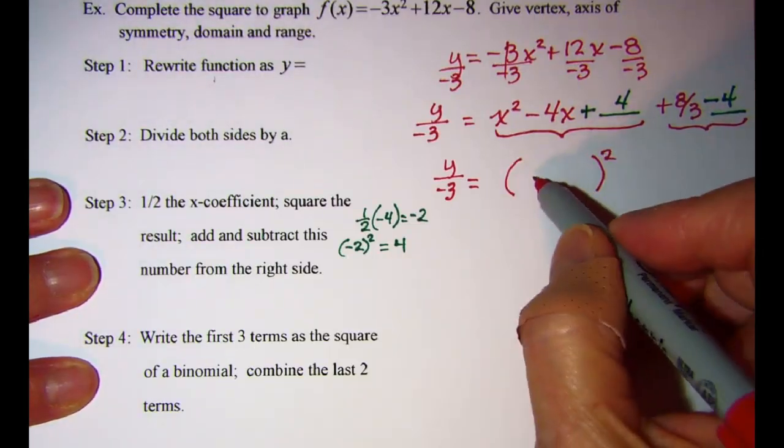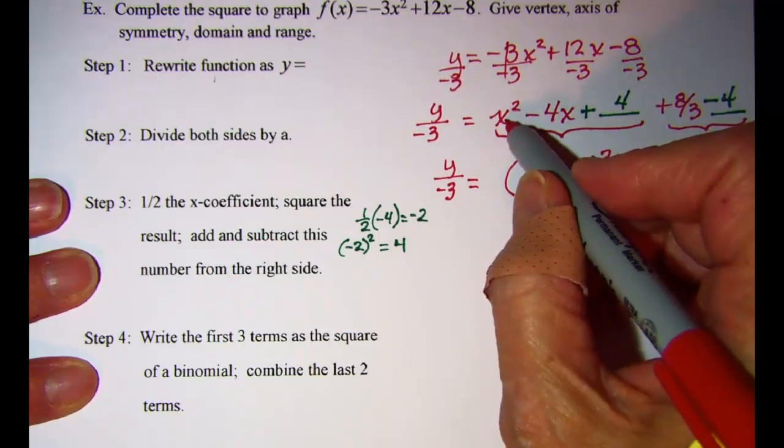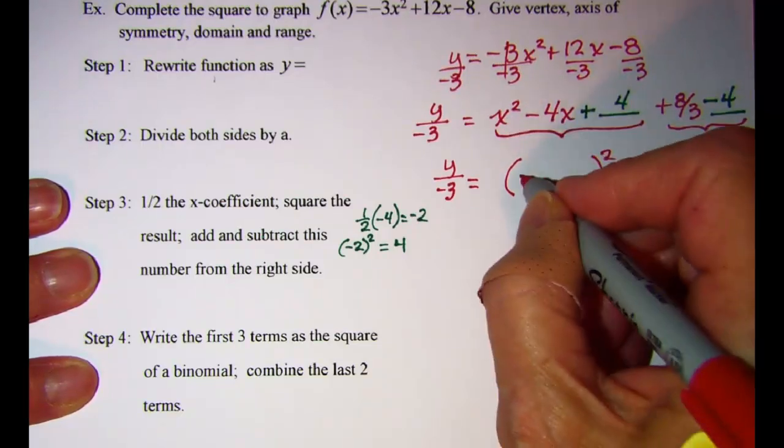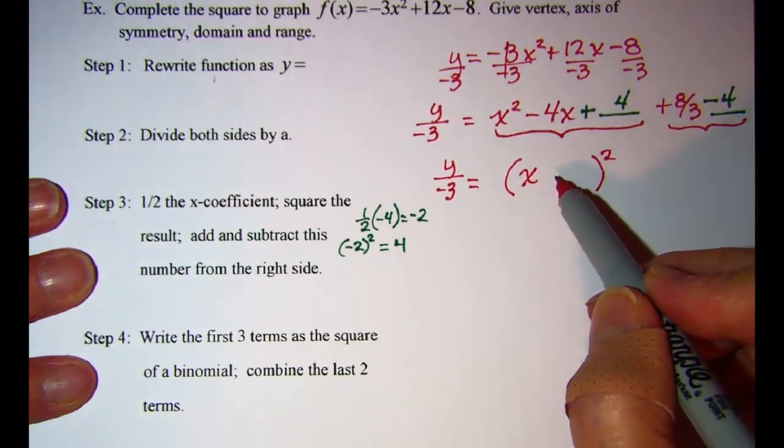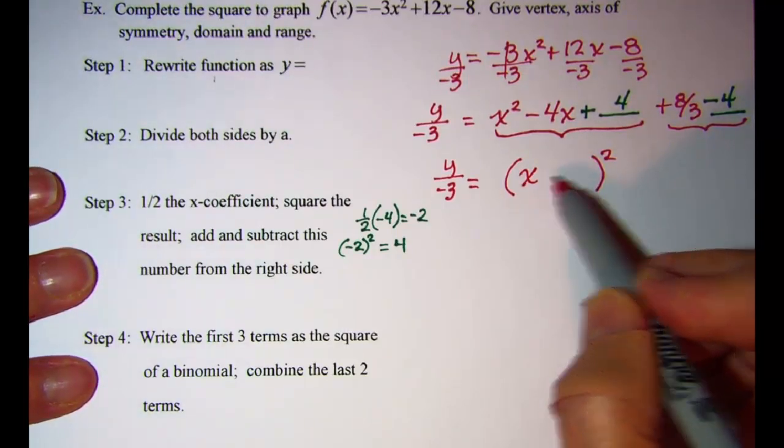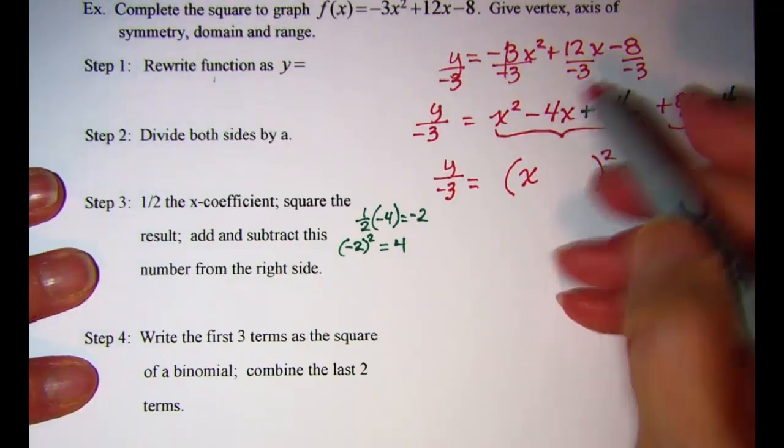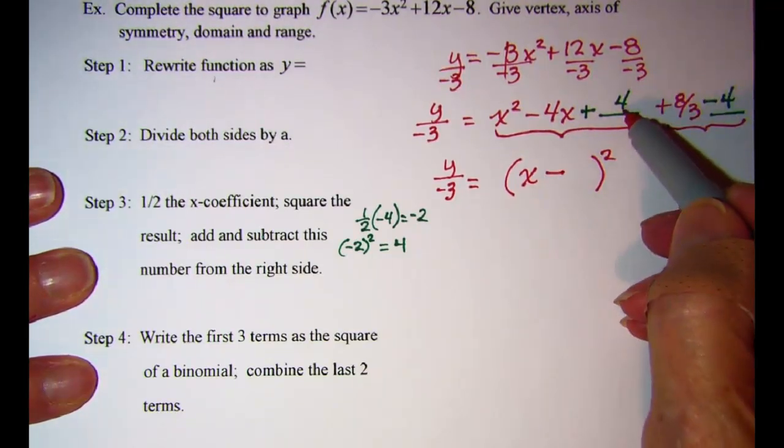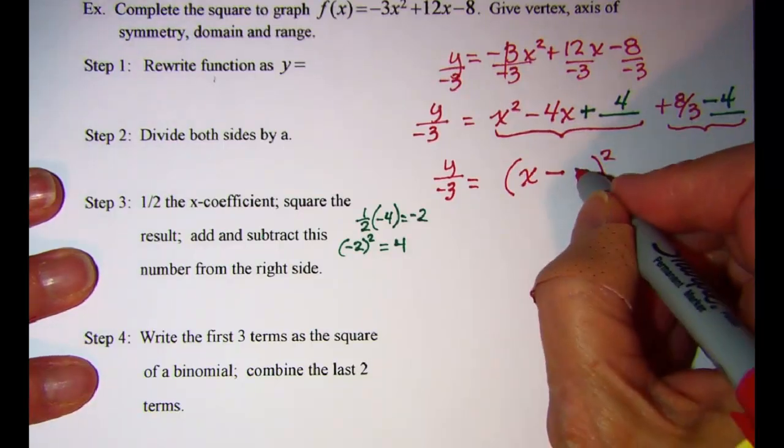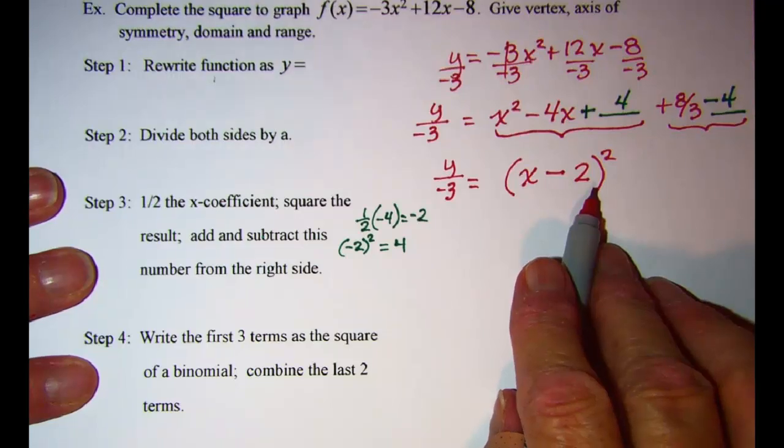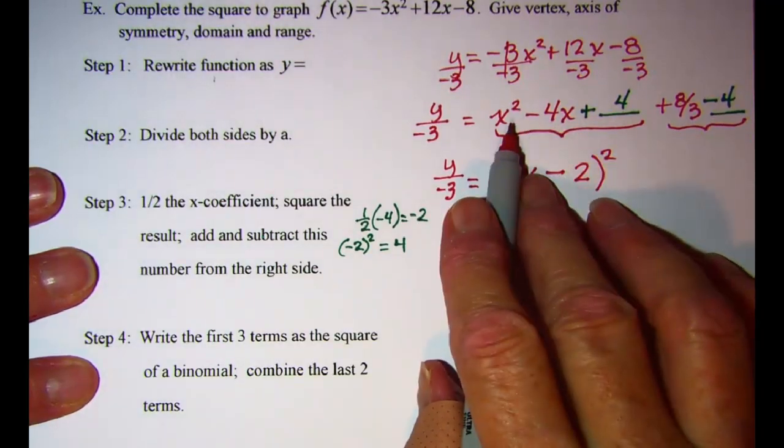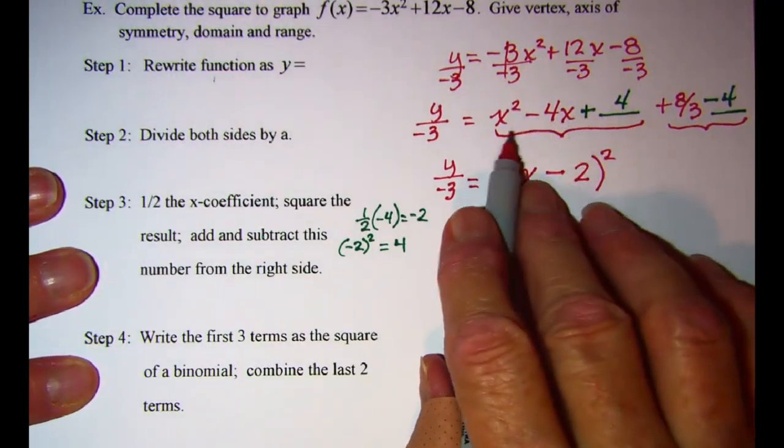The first term of this binomial will be the square root of x squared, so that will be x, and then the operation between the two terms is going to be a negative. And then the square root of the 4 is 2. So this binomial, if I were to square it out, would give me this trinomial.